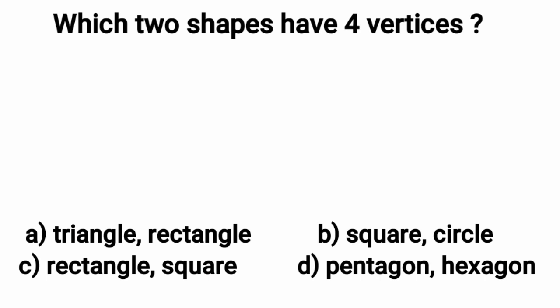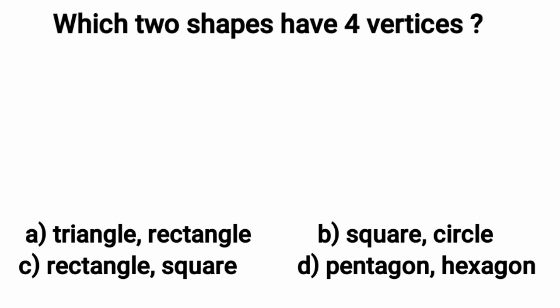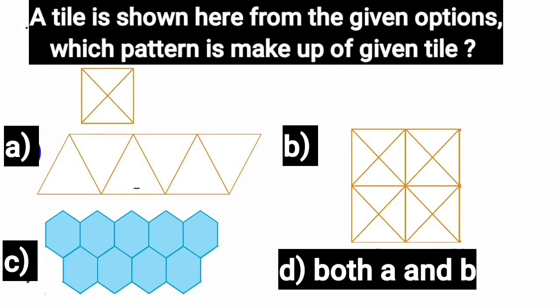Now we will move to option B, square and circle. Here, a square has four vertices and a circle has no vertex. Now in option C, we will draw a rectangle and a square. Here, a rectangle has four vertices. Likewise, the square also has four vertices. This is the required option. Option C, rectangle and square is correct and we will put a tick mark here.